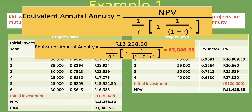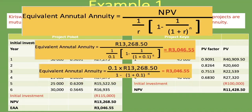Using the second formula for Project POCOT: 0.1 times 13,268.50, divided by (1 minus (1 plus 0.1) to the power of negative 6). This gives the exact same answer of 3,046.55. Whichever formula you choose, stick with it and practice using it so that in an exam situation you can apply it confidently and quickly.